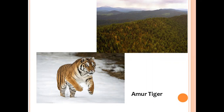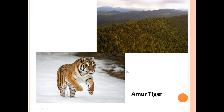The Amur tiger falls under CITES — the Convention on International Trade in Endangered Species of Flora and Fauna — specifically under Appendix I, meaning trade in this animal is prohibited. The Amur tiger, found in Siberia, has seen a drastic population decline due to illegal deforestation and heavy poaching in the region.